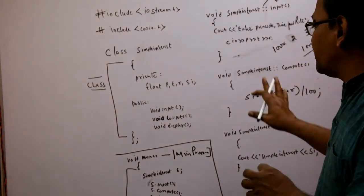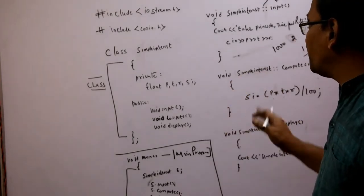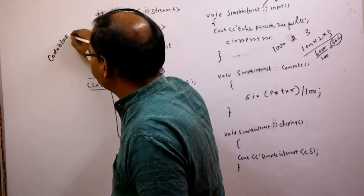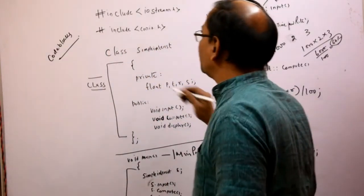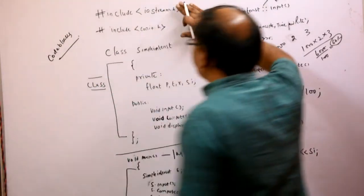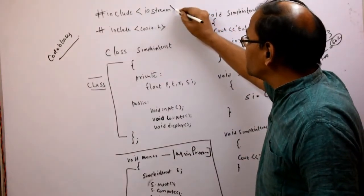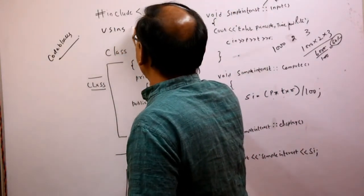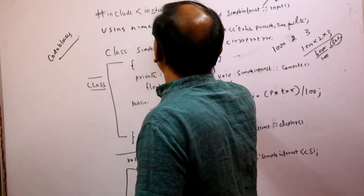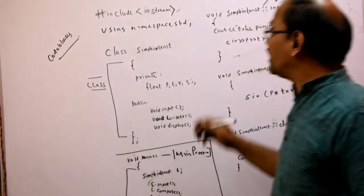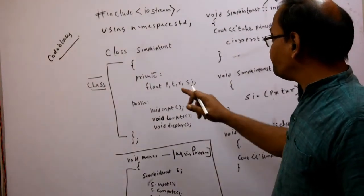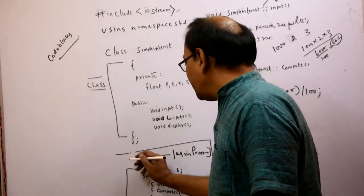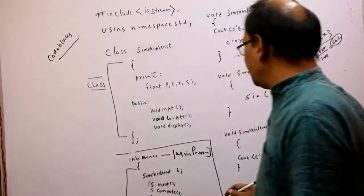Now, if we write the same program using Code::Blocks — there is an open source editor called Code::Blocks. Instead of iostream.h, we will use only iostream. We will not write conio.h, and we will write 'using namespace std'. Instead of void main, we will write int main, and we will not write getch. These are the small changes when writing in Code::Blocks.